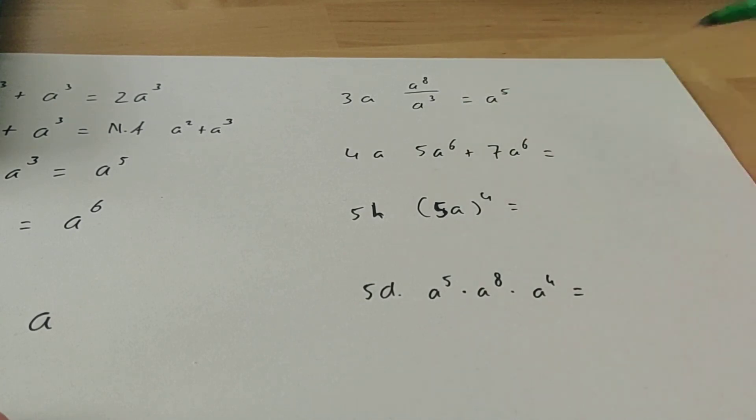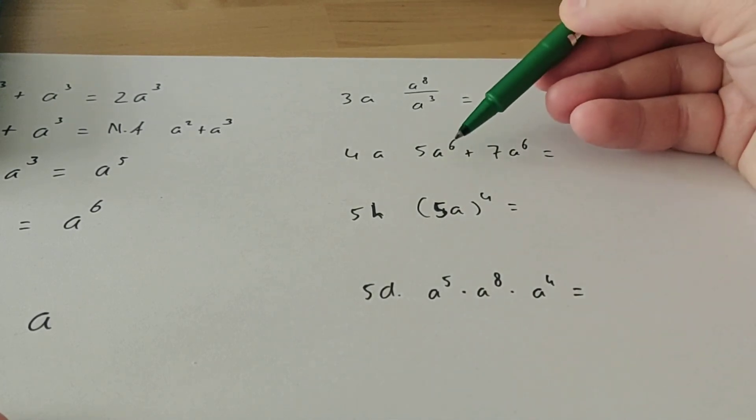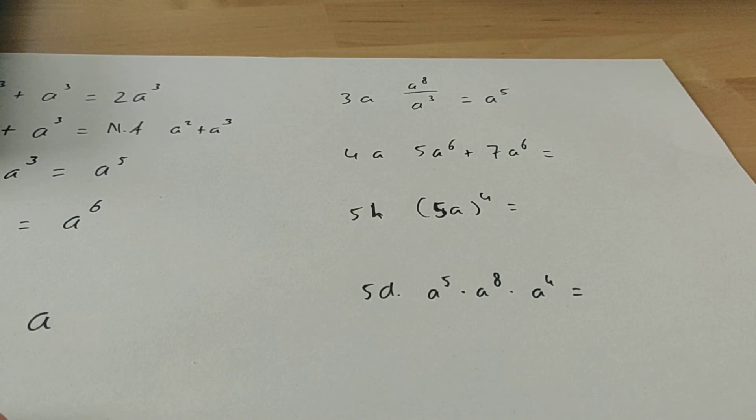If you want to add 2 powers, then they must be the same. Well here they are the same, because they are both 8 to the power of 6. So 5 plus 7 is 12. So 12 a to the power of 6.